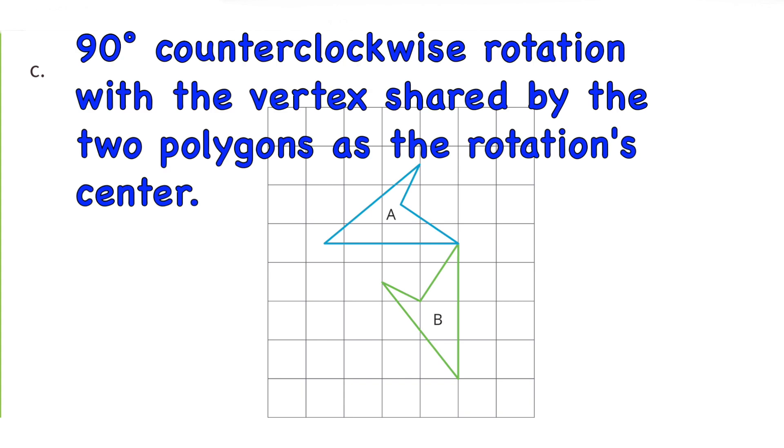C. A 90 degree counterclockwise rotation with the vertex shared by the two polygons as the rotation's center.